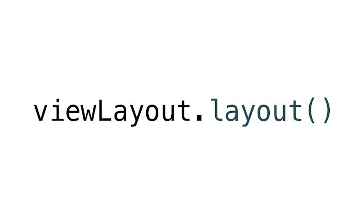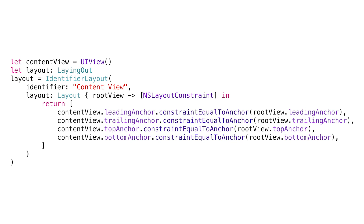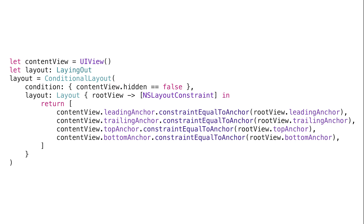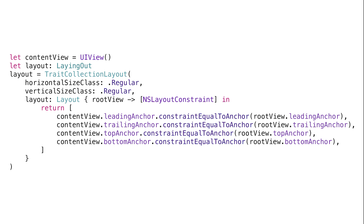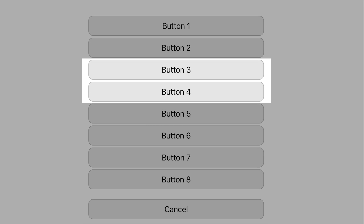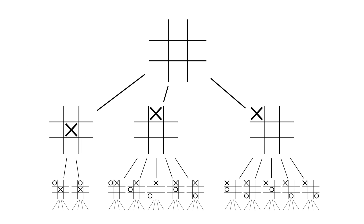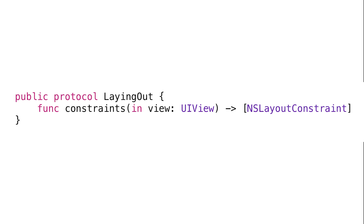ReLayout provides a bunch of implementations of the LayingOut protocol. Generate constraints with a closure using the Layout object. Mark those constraints with identifiers with the IdentifyingLayout object. Want to supply some constraints when a condition is true? Use the ConditionalLayout. Need constraints to apply for given traits? Then you've got the TraitCollectionLayout. What if you have a list of objects that you need to constrain relative to each other? The ListLayout will make that job trivial. You can combine and compose LayingOut objects together in all kinds of ways, and the protocol has just one function, so you can build all kinds of layouts.